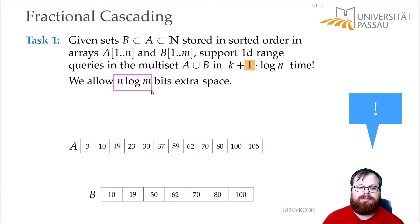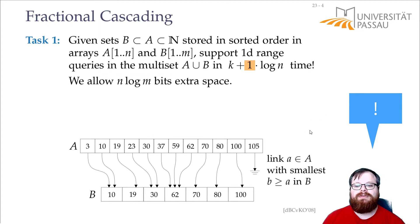This tells us, basically, for every element here, we want to point to one element there. And the element we want to point to is the smallest one that's at least as large as A. So, the element 3 here should point to number 10. Number 10 here should also point to 10, 19 to 19, 23 to 30, and so on. And at the very end, 105 points to nothing, because there is no element here.